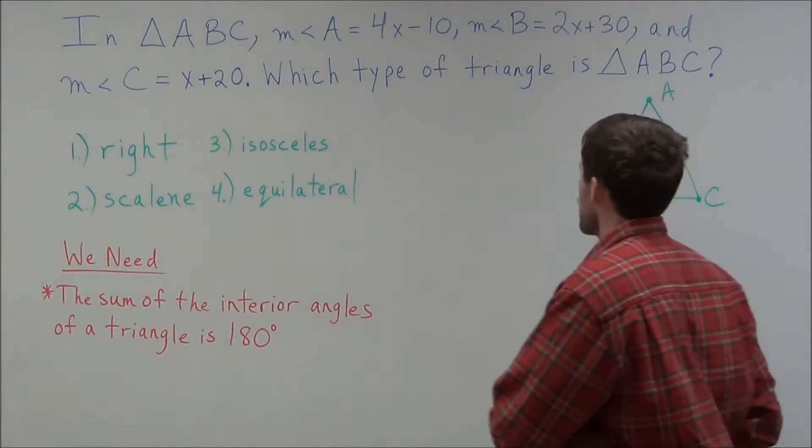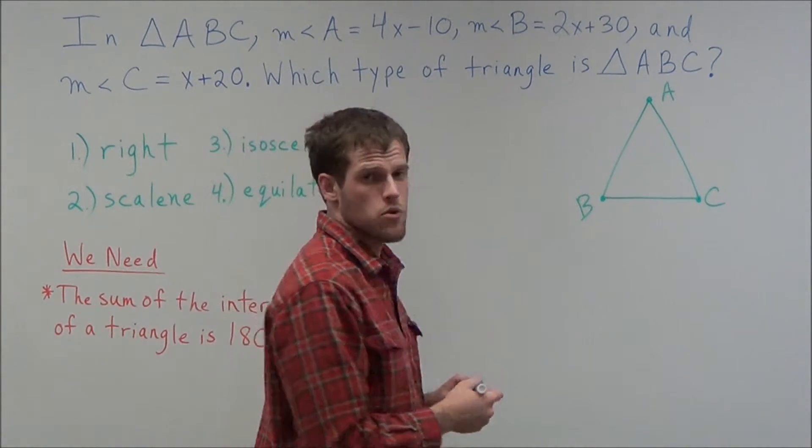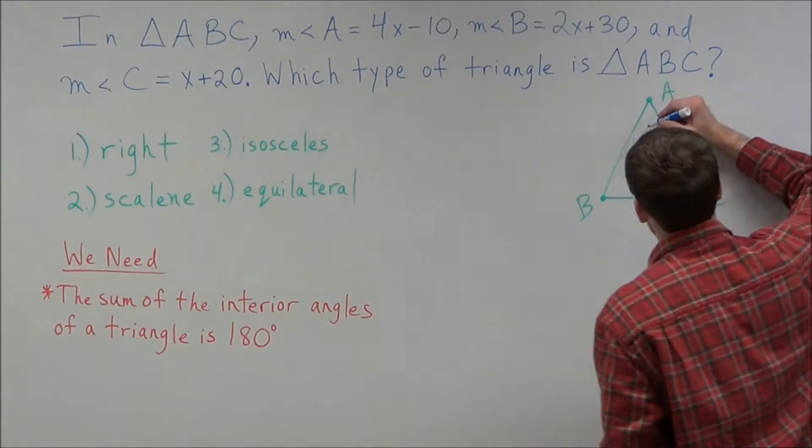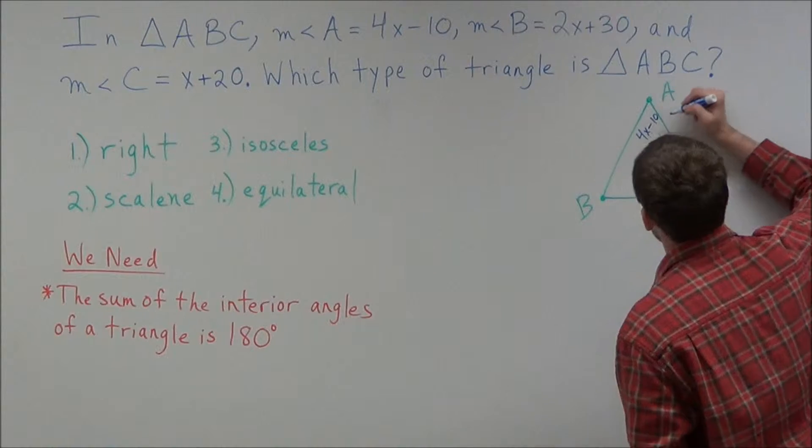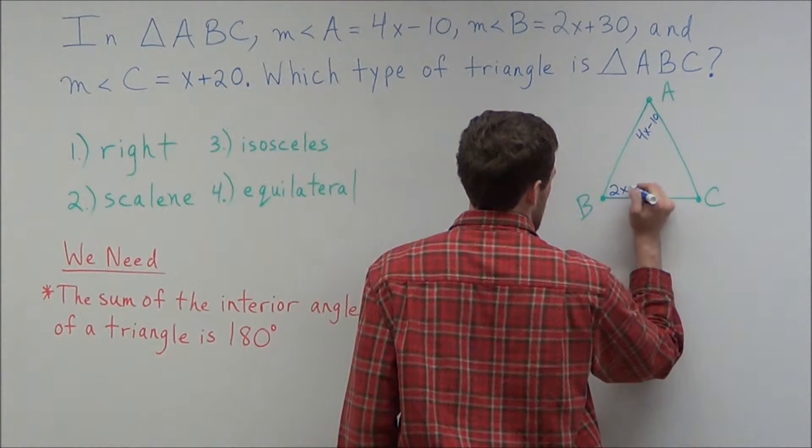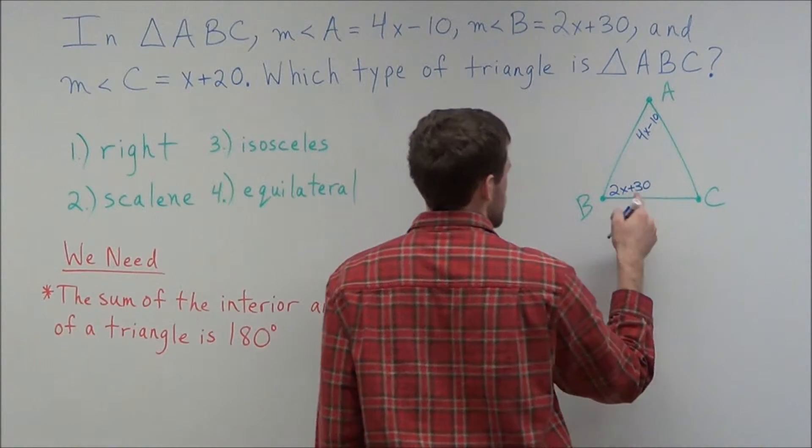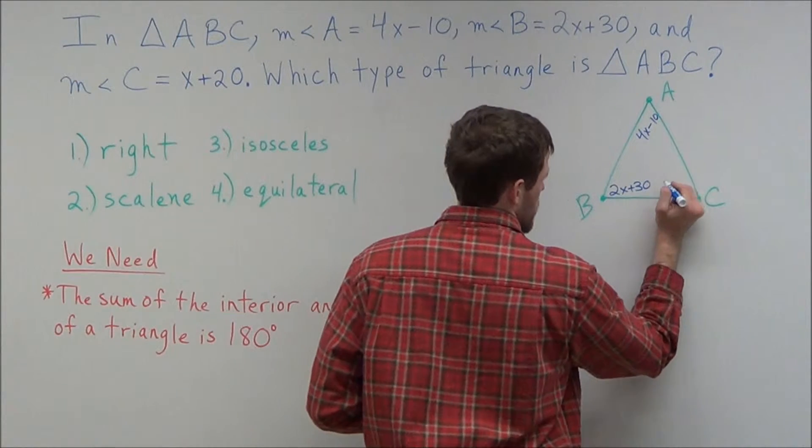And now we know, from the given information, we were told that the measure of angle A equals 4x minus 10. So we can write that in here, we have 4x minus 10 for the measure of angle A. And now the measure of angle B is 2x plus 30. So we can label this angle 2x plus 30. And finally the measure of angle C is x plus 20.